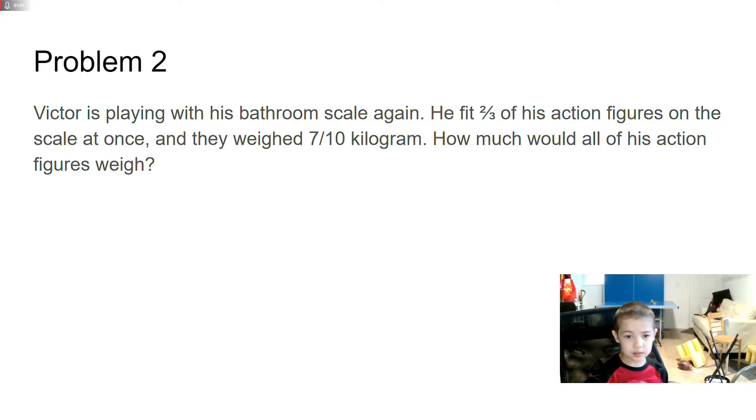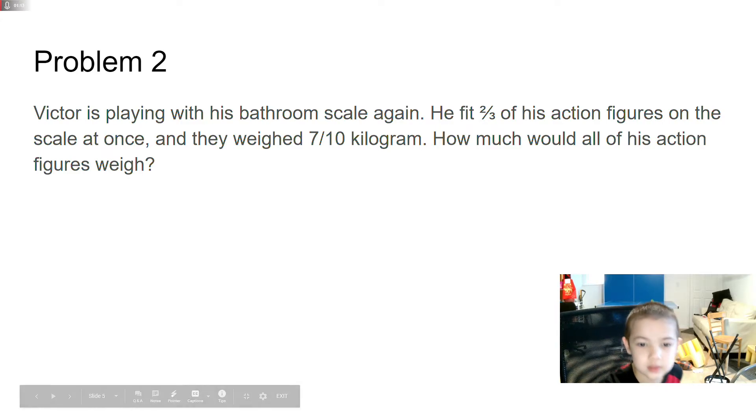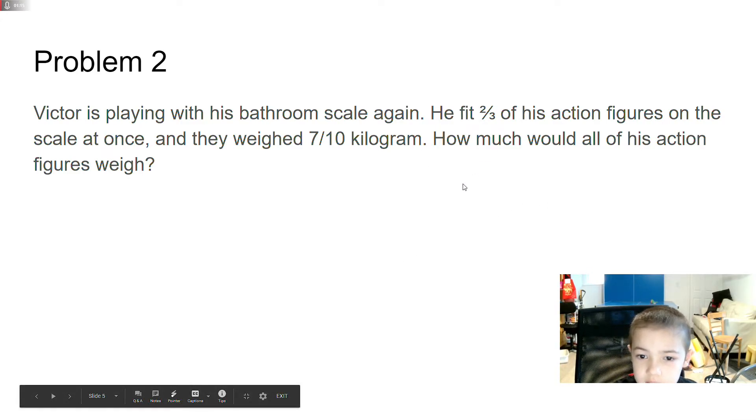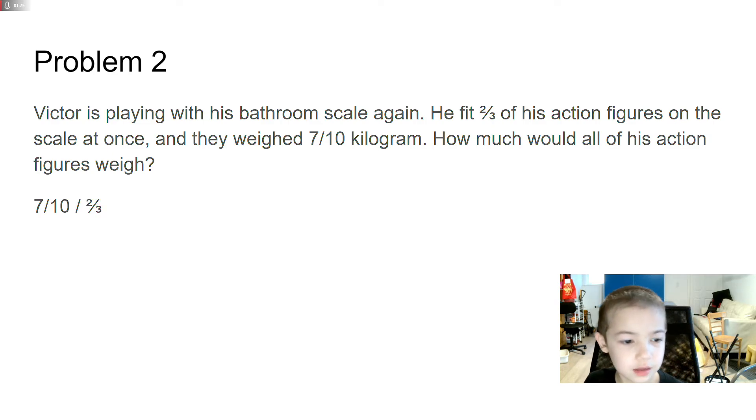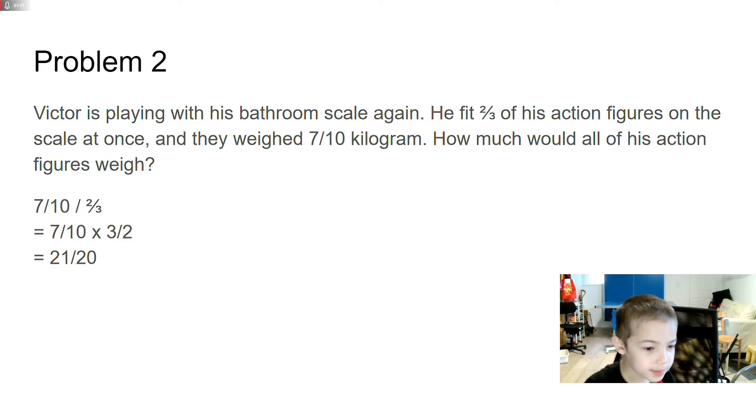So 2 over 3 is 7 over 10. This is a ratio. So 7 over 10 is how much kilograms 2 over 3 of his action figures weigh. So how much do all of his figures weigh? You want to do 7 over 10 divided by 2 over 3, and 7 over 10 times the reciprocal 3 over 2. You multiply those and that's 21 over 20.